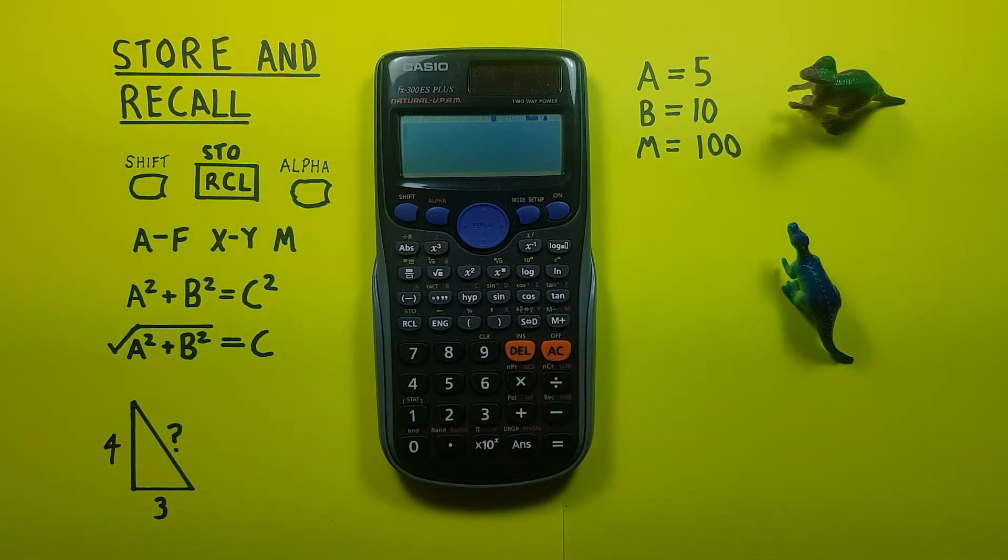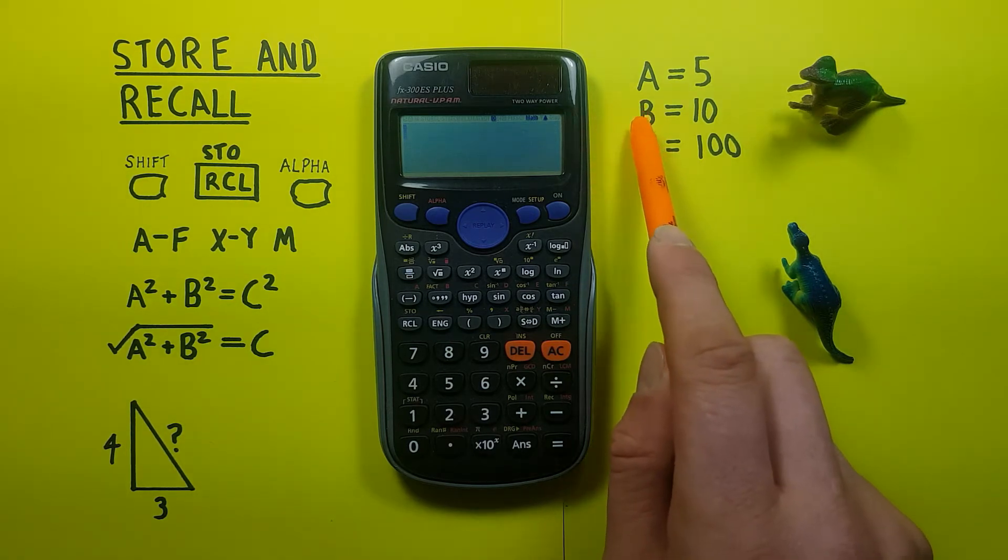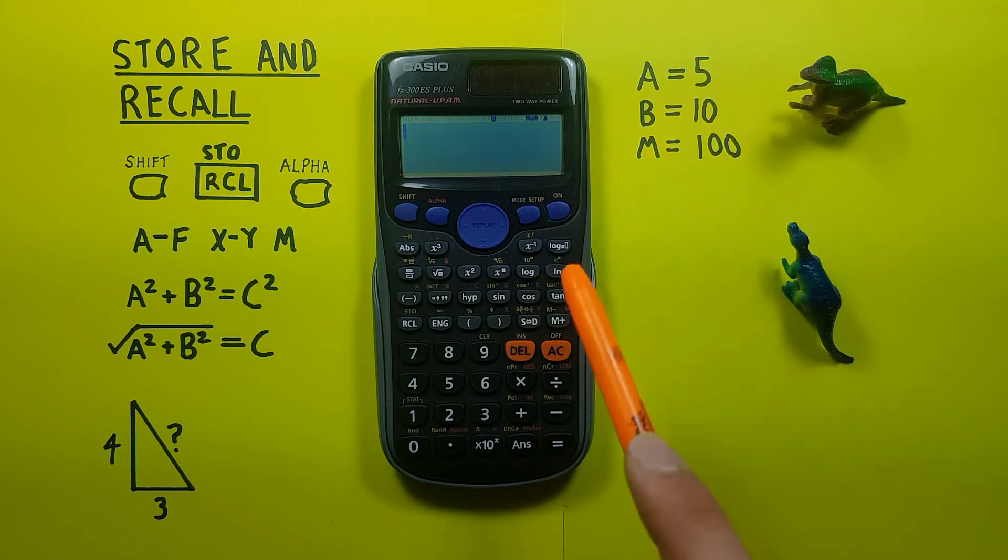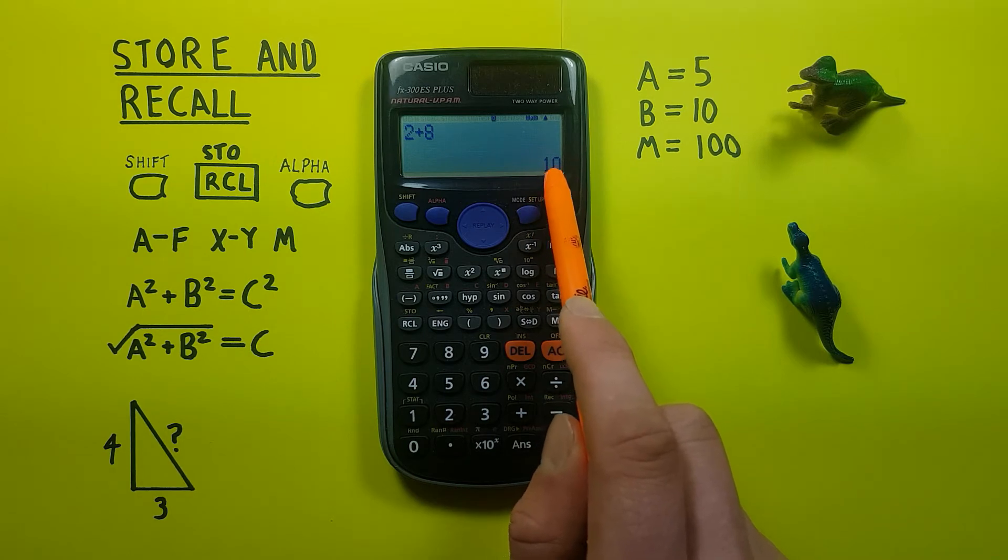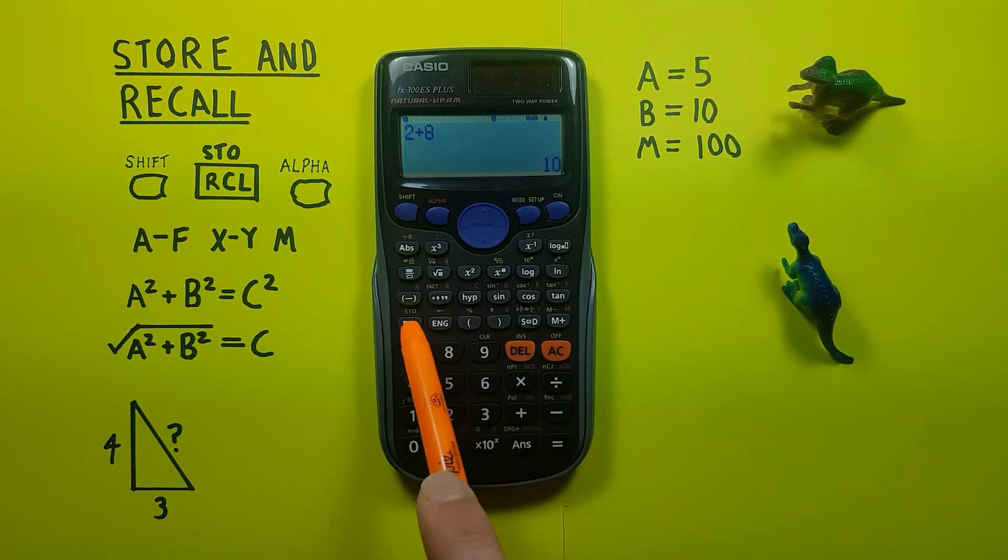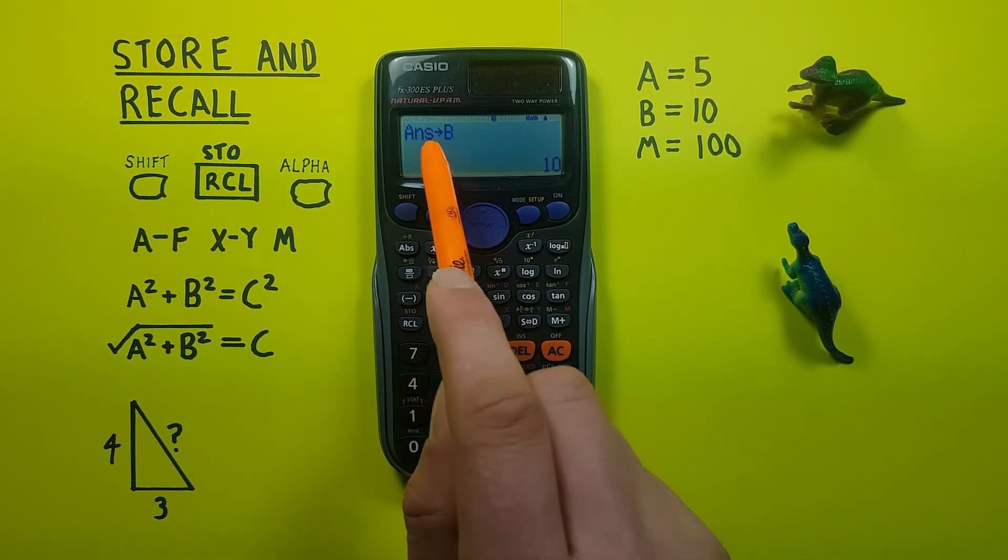We can also store the result of calculations. So for example, if we want to put something into B, we'll do 2 plus 8 equals, see that equals 10, and then we do the same: shift, store, into B. It says answer into B, that's our 10.